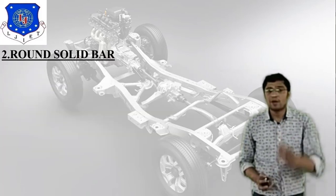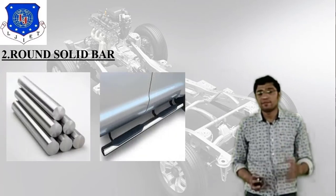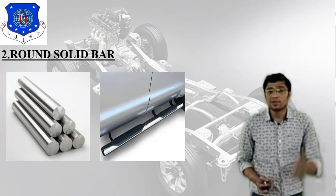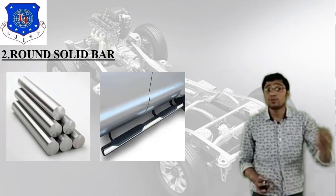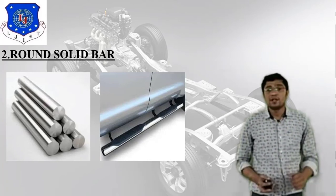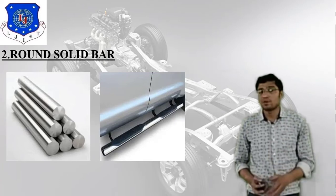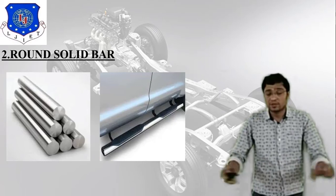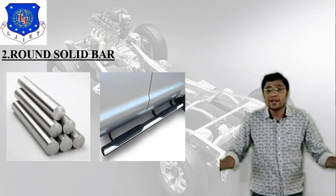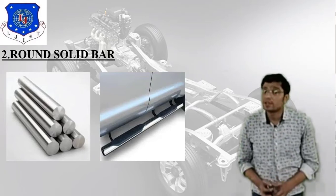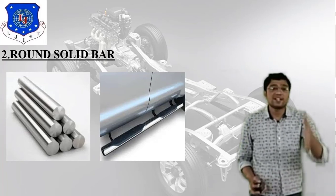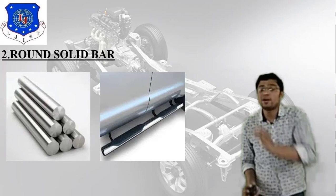The second type is the round solid bar. According to requirement we can use any section. On the left side you can see the round solid bar — it is not hollow, it is a round solid bar, available in different sizes. On the right side is its application: in a car, the bottom portion uses a round solid bar, which is a very long bar generally used in the bottom portion of the car.